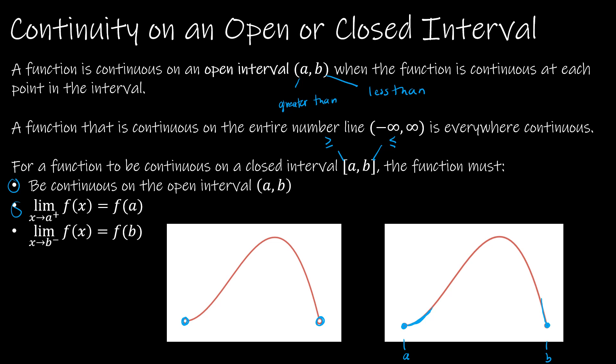Now, if you have a function that's continuous over the entire number line — obviously an open interval because you can never contain infinity — that's called continuous everywhere, or everywhere continuous.